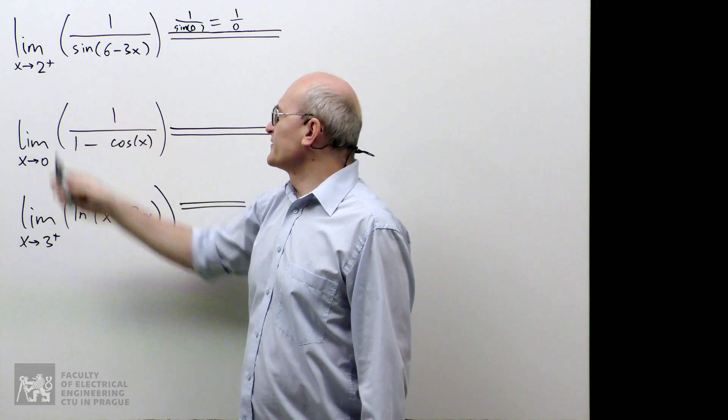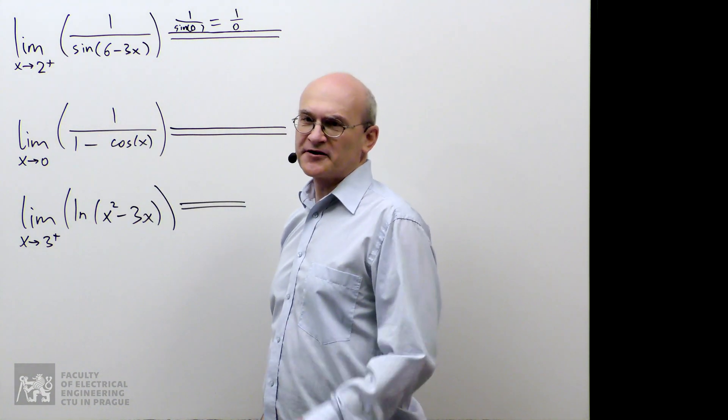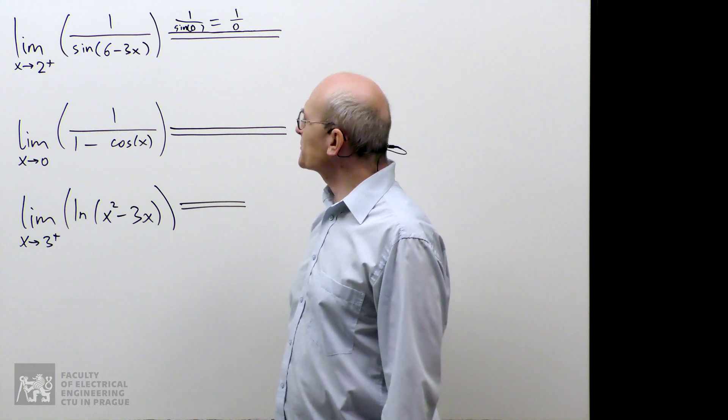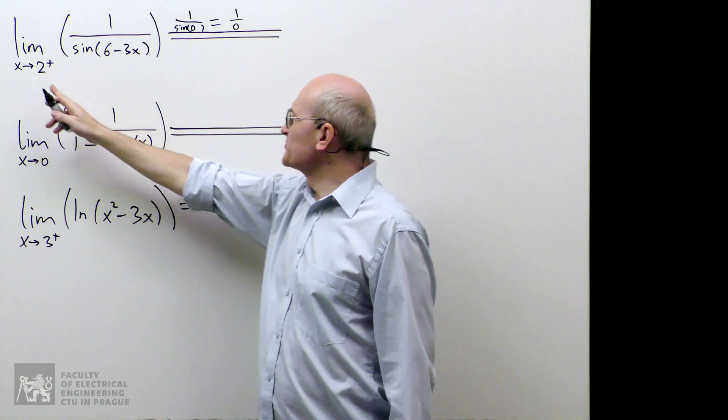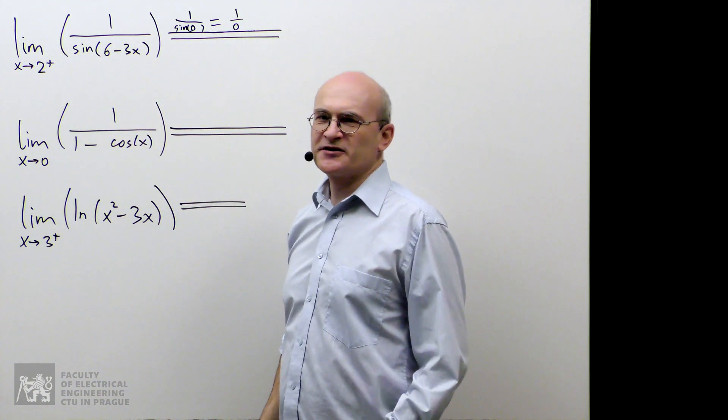When I'm approaching 2 from the right, it means I'm taking x, which is near 2, but a little bit larger. Now, I take a number which is a little bit larger than 2, I multiply it by 3, I get something which is a little bit larger than 6.